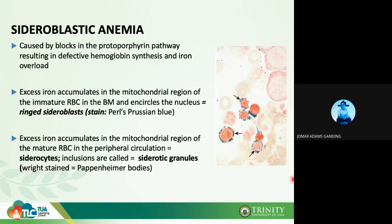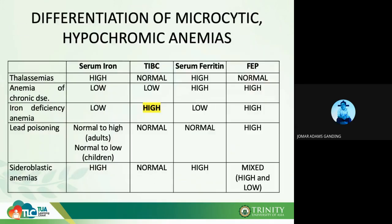In sideroblastic anemia there is iron overload, which will be discussed later under hereditary hemochromatosis and hemosiderosis. To differentiate the microcytic hypochromic anemias — thalassemia, anemia of chronic disease, iron deficiency anemia, lead poisoning, and sideroblastic anemia — take note of serum iron levels.